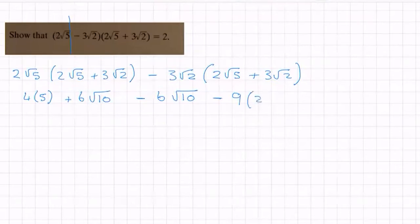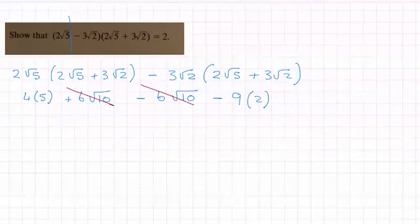√2 by √2 is 2. Okay, so the -6√10 and +6√10 cancel. 4 times 5 is 20, minus 9 times 2 is 18, equals 2. Okay, 2 equals 2, QED.